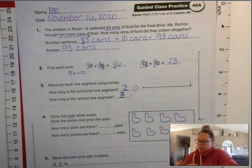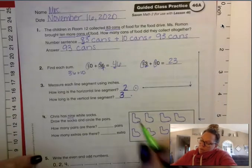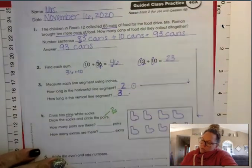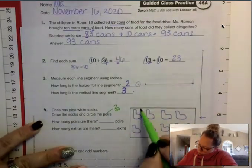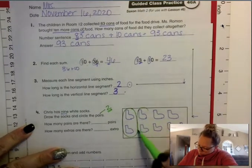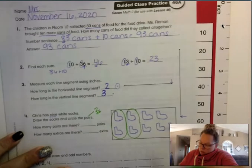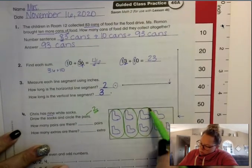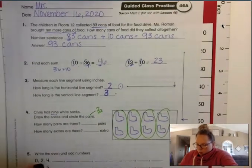And then we have to circle the pairs it said, right? So a pair is how many? A pair is 2. So I have to circle them by 2. There's a pair. There's a pair. One, two. One, two.